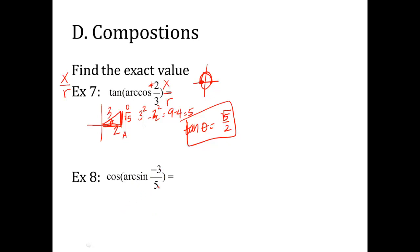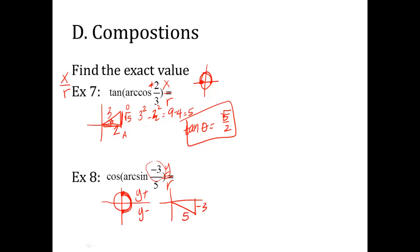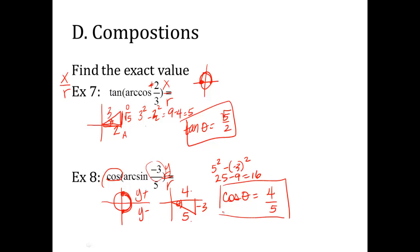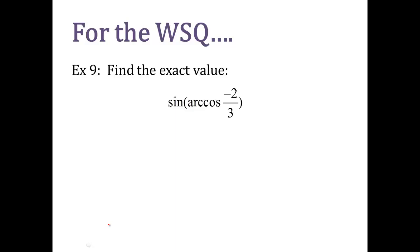Example 8: cosine of arc sine of negative 3 over 5. Sine is y over r, and this is negative, so it must come from quadrant 4 (within arc sine's restriction of quadrants 1 and 4). The y is negative 3, r is 5. Using the Pythagorean theorem: 5² minus 3² = 25 minus 9 = 16, so the missing side is 4. Cosine is adjacent over hypotenuse: 4 over 5. Try the next one: find the exact value of sine of arc cosine of negative 2 over 3.